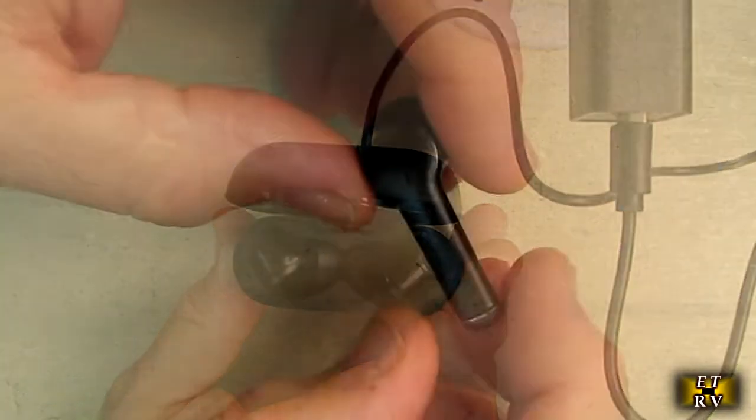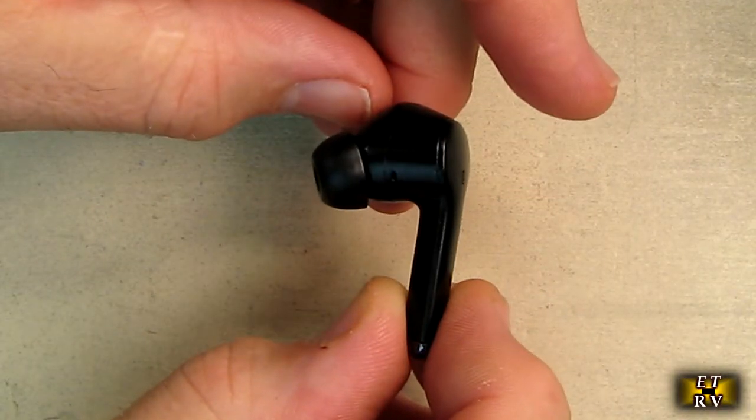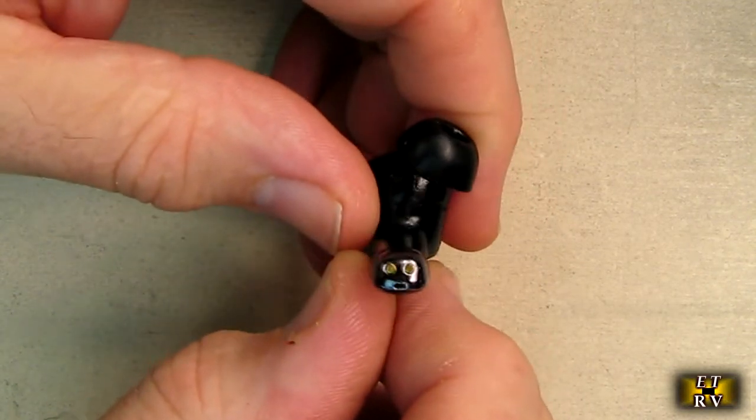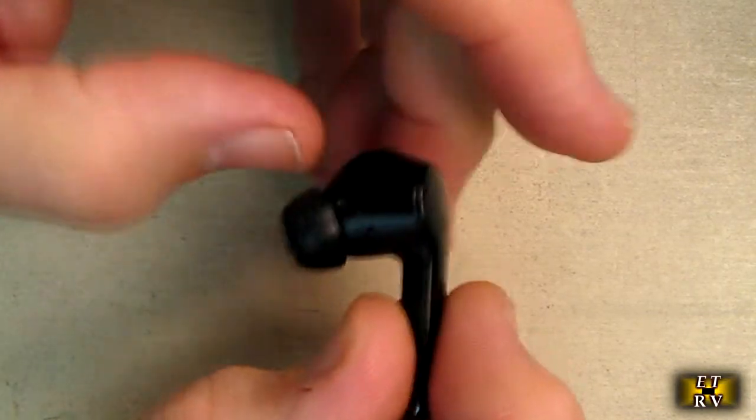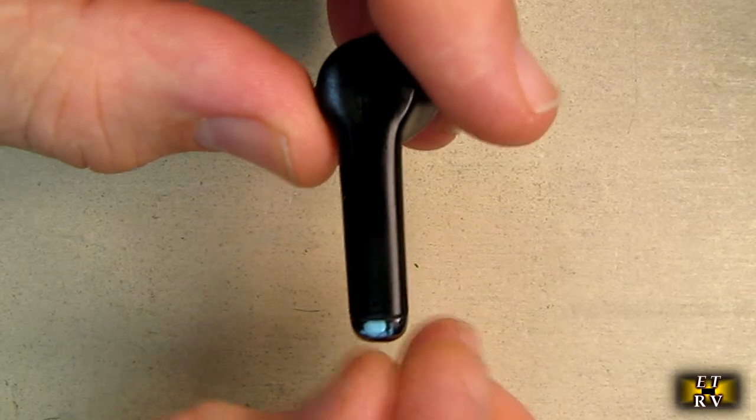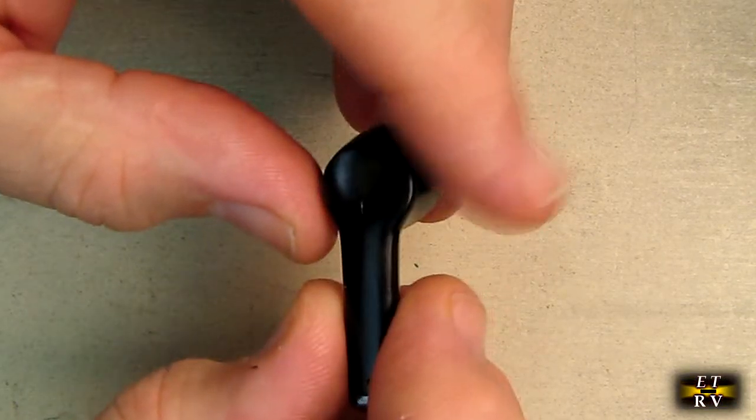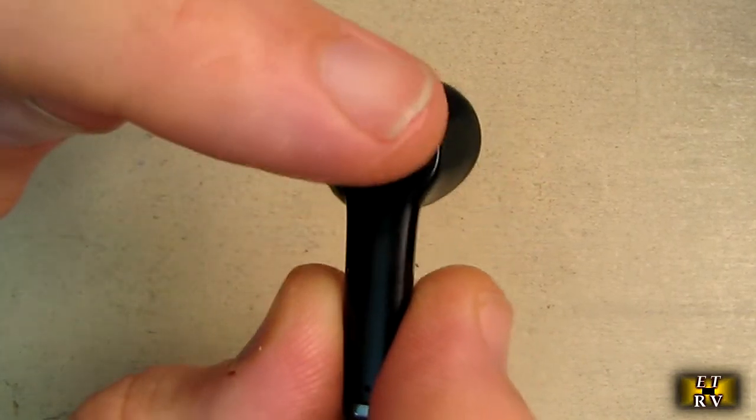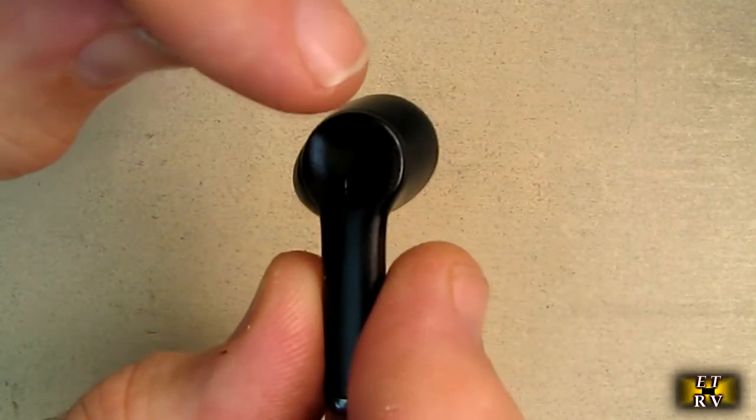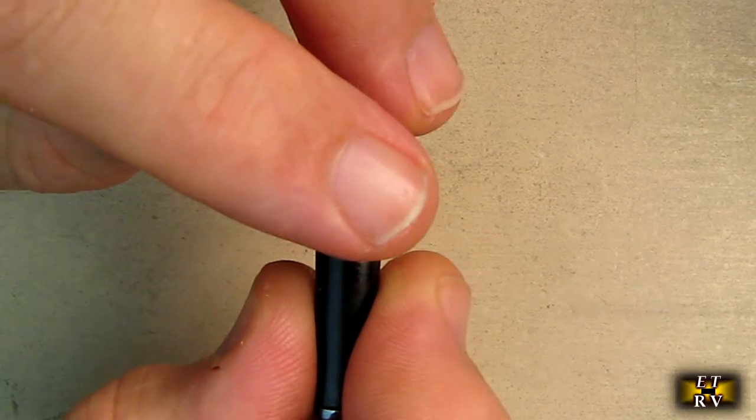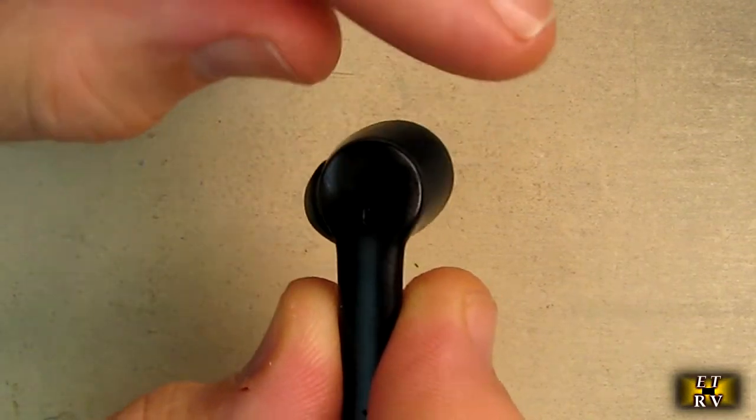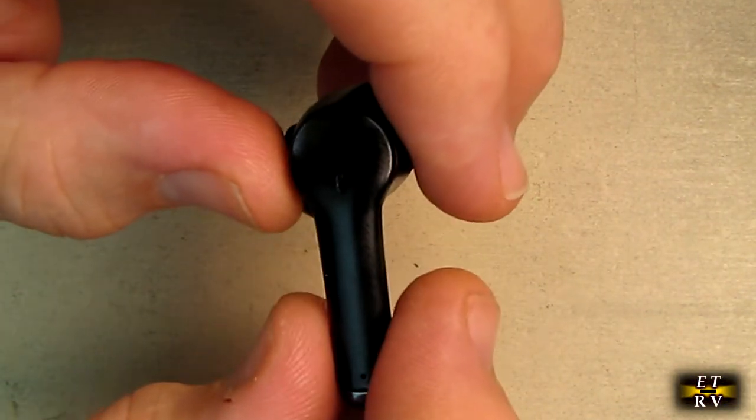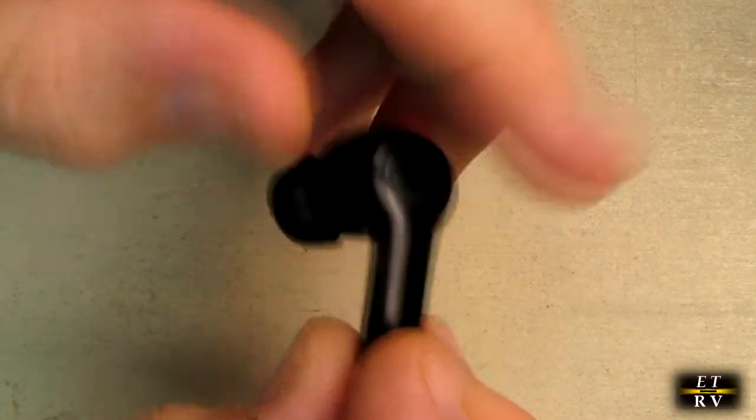Here's a close-up of the left earbud showing the bottom where the charging port is and the little status LED blinking right now. Here is the microphone—that little hole right there. If I touch that, you hear the sound. When putting this in, you want to avoid closing that or being near it because it'll get a feedback sound.